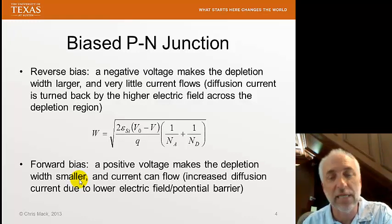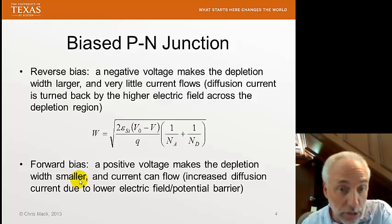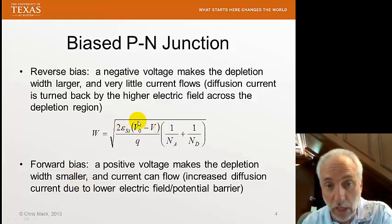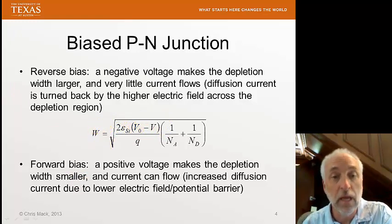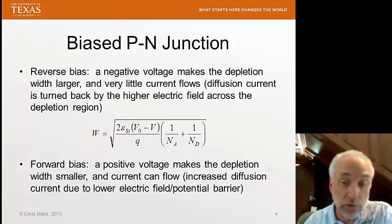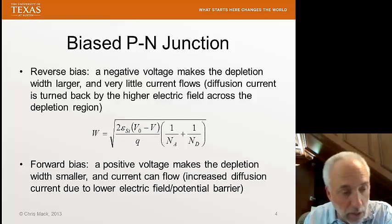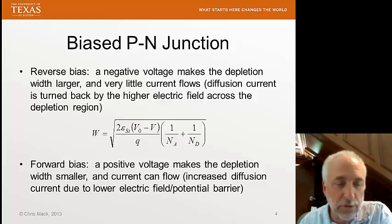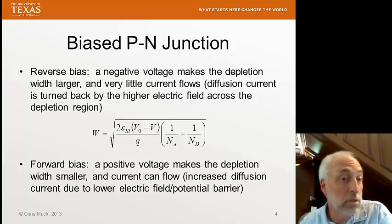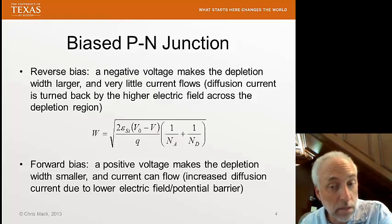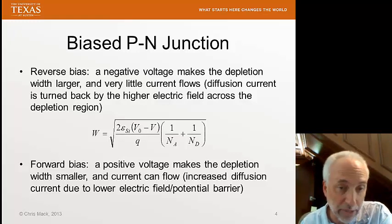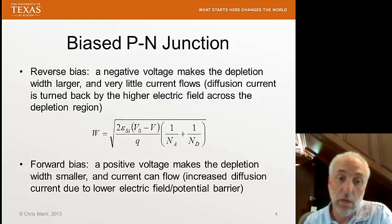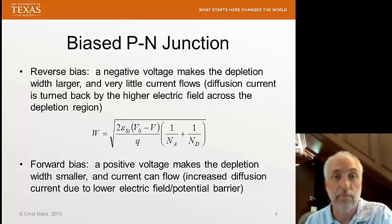But when I forward bias, the exact opposite happens. As V starts getting larger, it starts approaching the built-in voltage V0, then V0 minus V, this term here, becomes smaller, and our depletion width becomes smaller. As that width becomes smaller, it becomes easier for current to flow. So you've got diffusion that is causing charge, either both electrons and holes, to go into the depletion region. But now the depletion region is much narrower, and it's easier for those charges to keep going. And they won't be turned back by the electric field because the electric field, the potential barrier across that depletion region is now lower. It's easier for charge to flow, and therefore current will flow. If you forward bias the p-n junction, you get current flow.